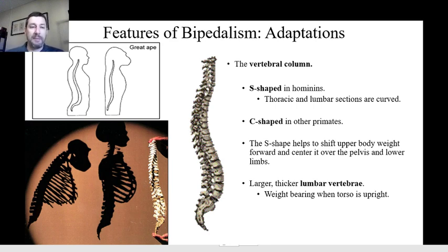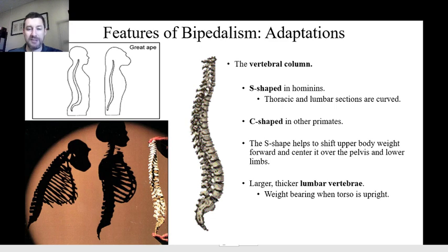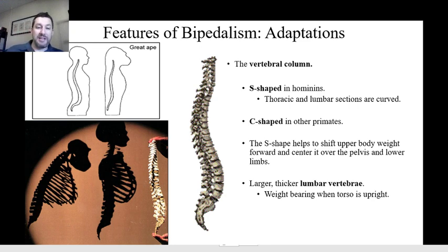Another adaptation we see in bipeds, especially ourselves, is that the shape of the vertebral column is different. In humans the vertebral column is shaped like an S — it has this back and forth curve, with the thoracic section curved out and the lumbar section curved in. That's actually extremely unusual — if you look at most animal skeletons, their spine is relatively straight with a one-dimensional curve. In most primates the vertebral column is C-shaped, which is why they're hunched over all the time — they don't have a back that allows them to straighten up. That S-shape creates a coil that shifts upper body weight forward and centers it over the pelvis and the lower limbs.